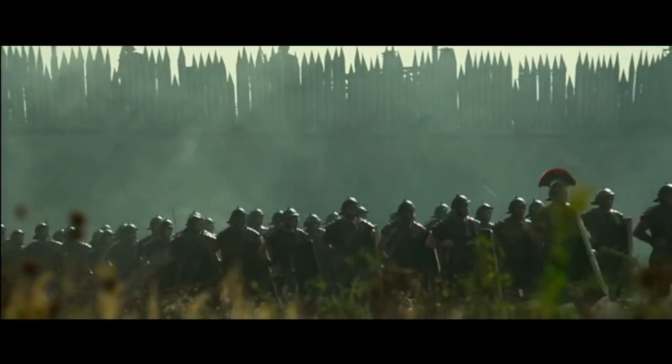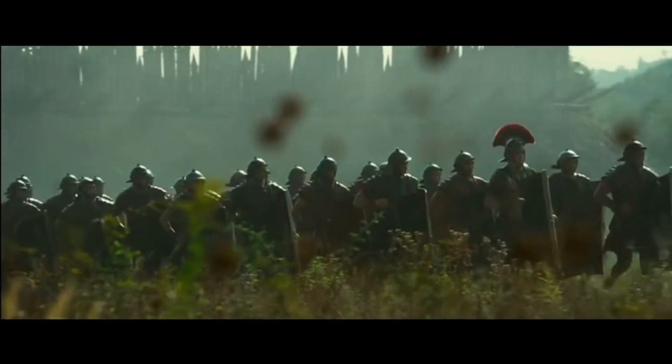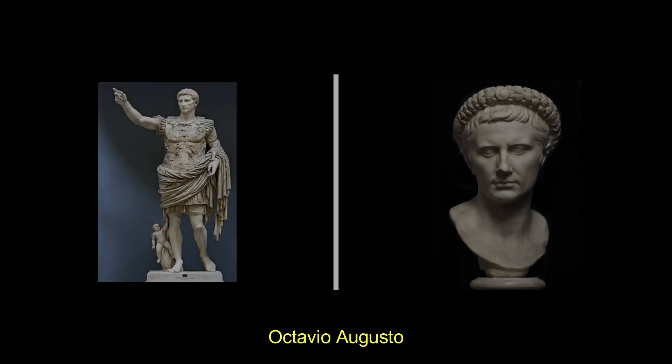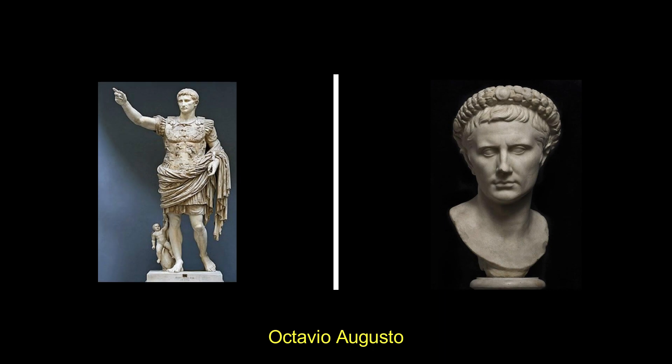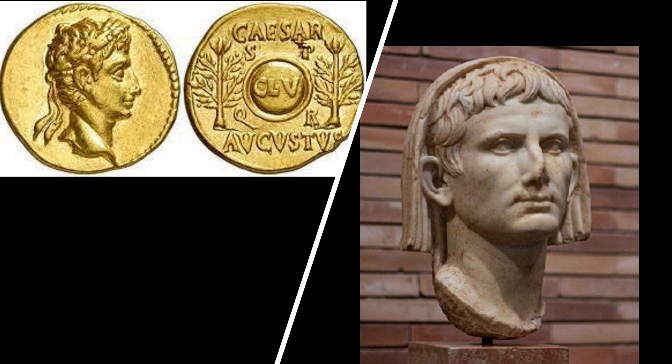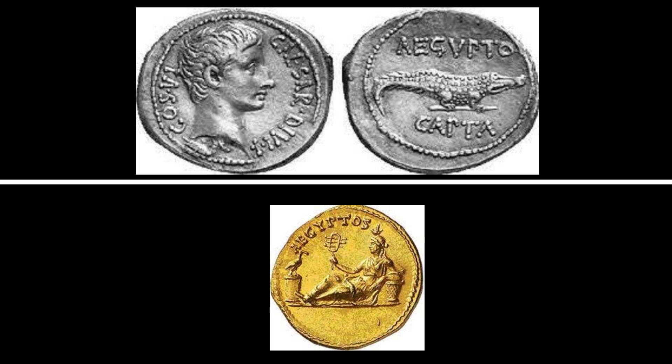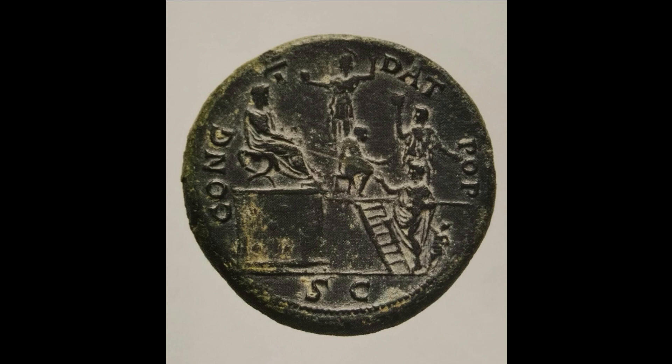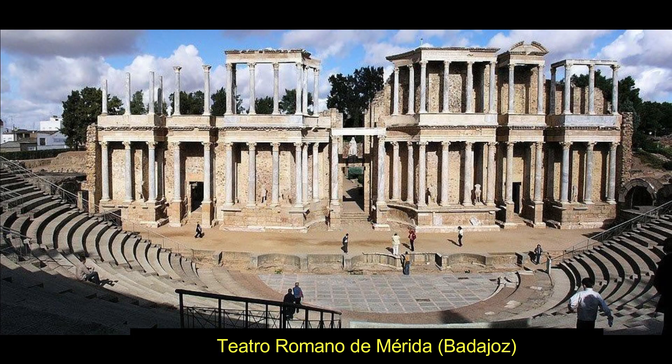Tras este periodo de dictadura de Julio César, y tras una guerra civil, comenzó el Imperio Romano. Su primer emperador, hijo adoptivo de Julio César, fue Octavio Augusto. Este hizo crecer el Imperio, apoderándose de otros grandes imperios como Egipto. En nuestro país, Hispania, fundó muchas ciudades. Una de las más famosas fue Mérida, o Emérita Augusta.